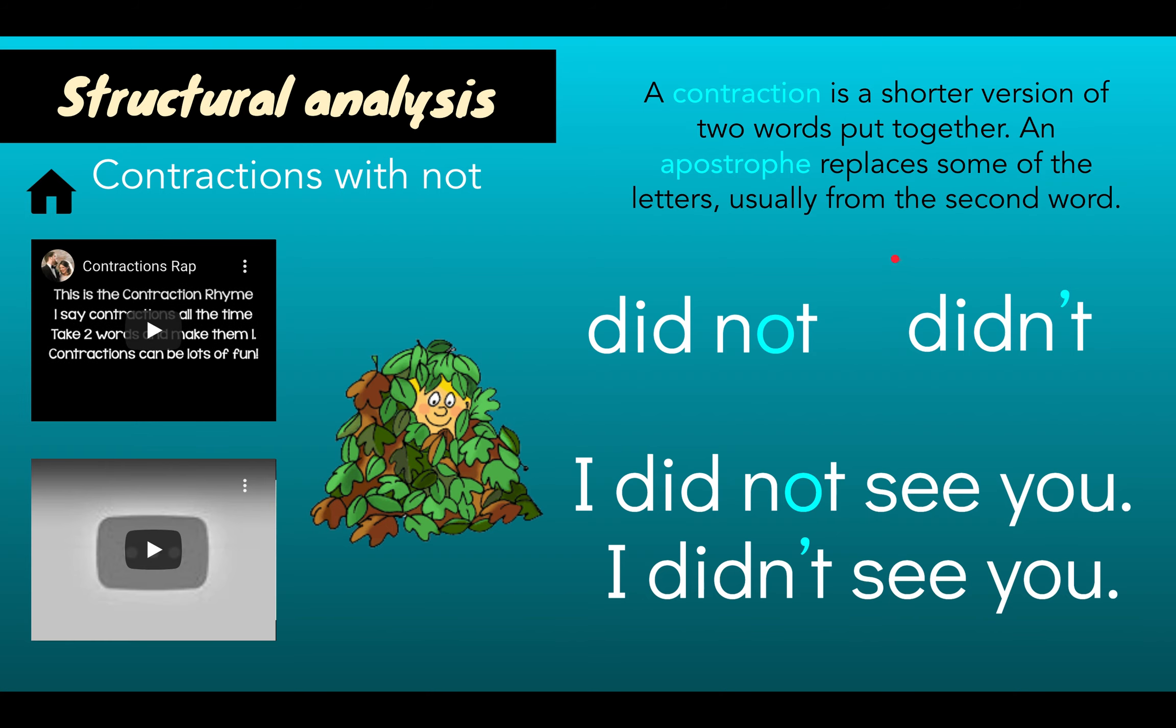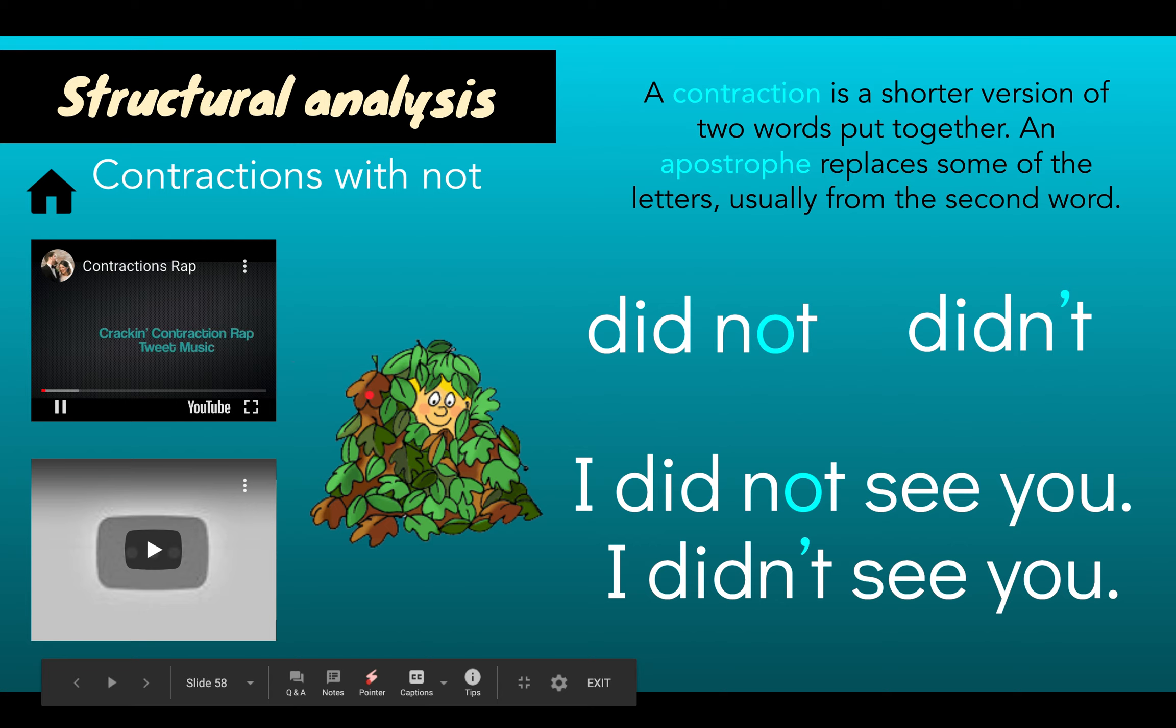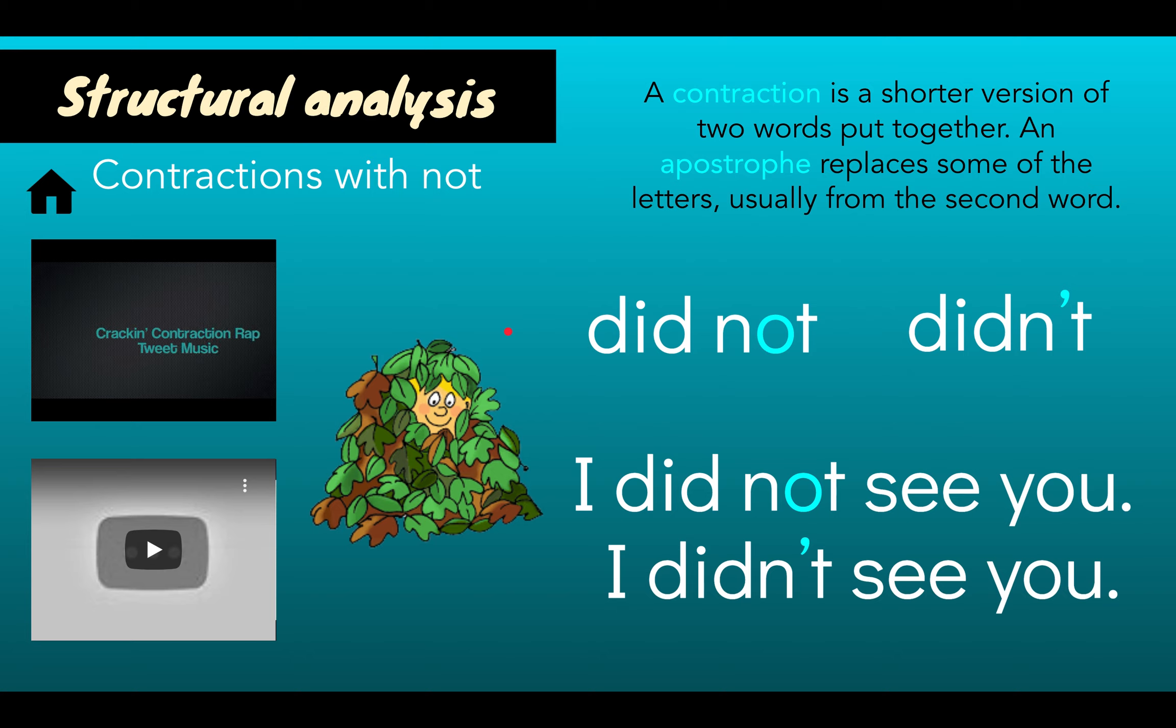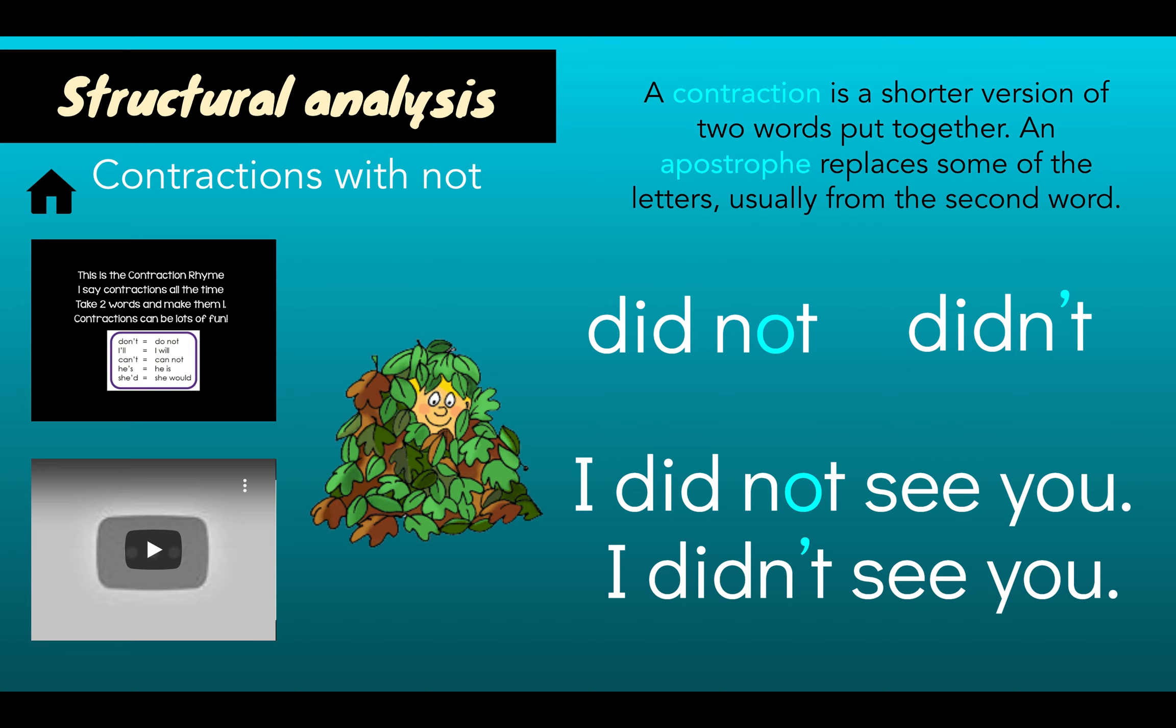Now we're going to review. Remember, friends, we've learned about contractions. A contraction is a shorter version of two words that are put together. Remember, that apostrophe replaces some of the letters. This is the contraction rhyme. I say contractions all the time. Take two words and make them one. Contractions can be lots of fun. It's not that hard, I'll show you how. Let's learn about contractions now. When I say I am, you say I'm. When I say it is, you say it's. When I say you are, you say you're.